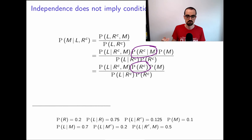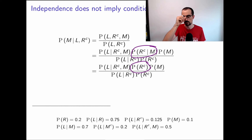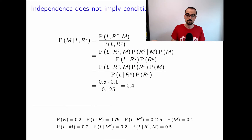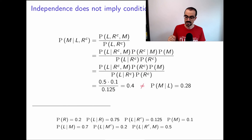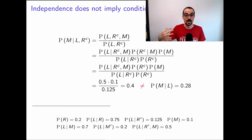We use the independence assumption and plug in P(R̄) = 0.8. When we plug in all the numbers we get 0.8, which is very different from 0.28. This confirms: independence does not imply conditional independence.